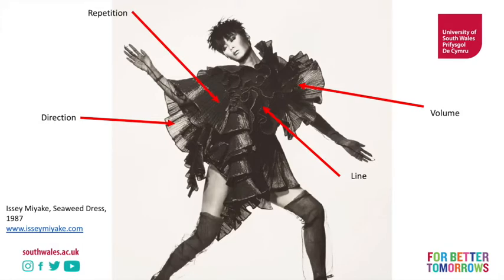We can see the use of repetition here, with the repeating lines over and over again, helping us create that sense of volume. It should also be said that the contrast created — another principle — between the body, the figure underneath, and the garment itself, also aids in the visual communication.